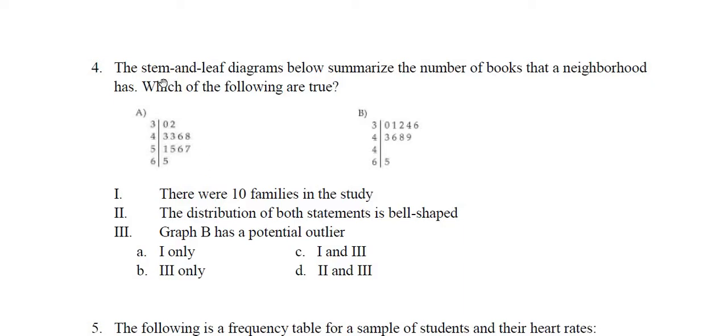In this problem, we're going to do number four. It says the stem-and-leaf diagrams below summarize the number of books that a neighborhood has. Which of the following are true? Let's see, statement one: there were 10 families in the study.